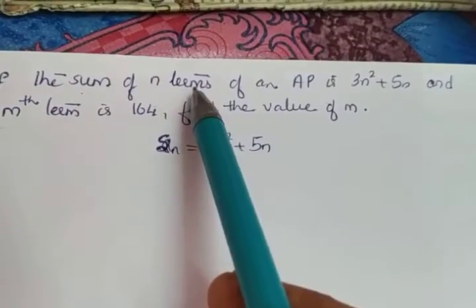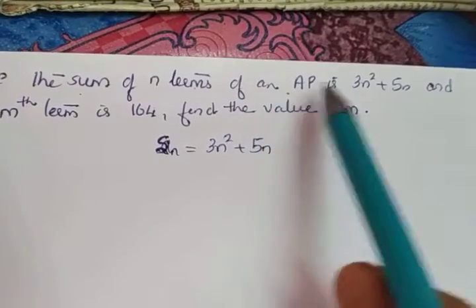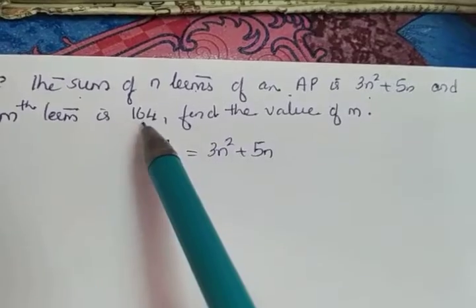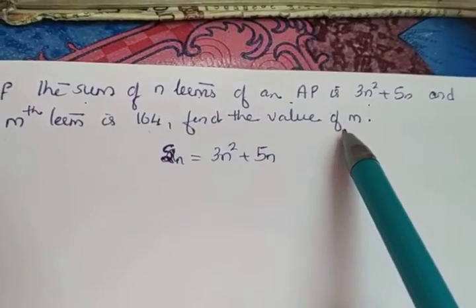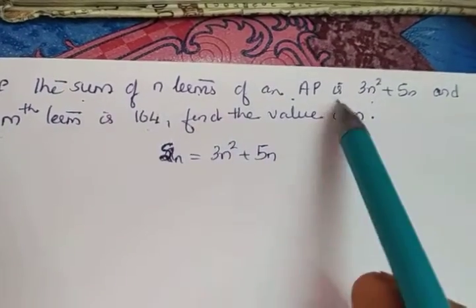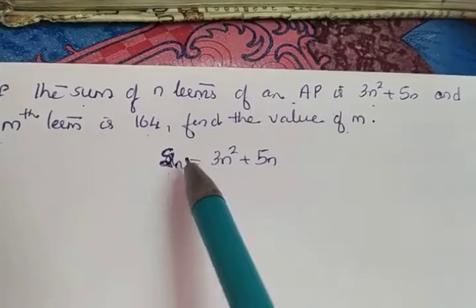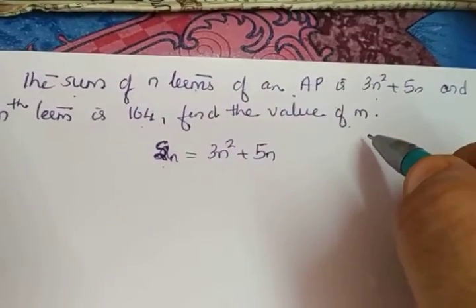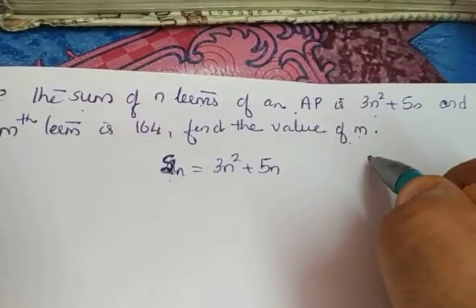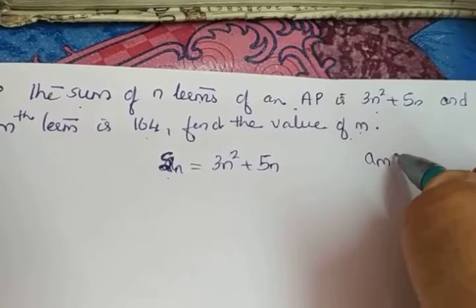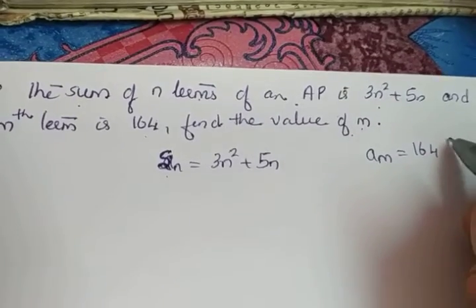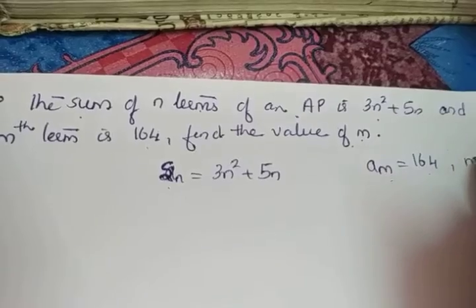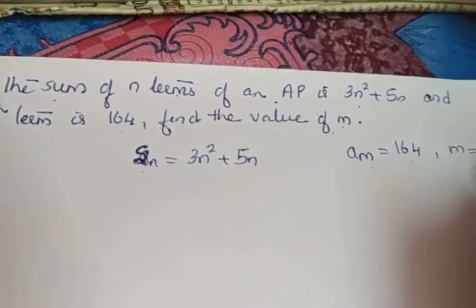Next question: if the sum of n terms of an AP is 3n² + 5n and the mth term is 164, find the value of m. So Sn is given as 3n² + 5n, and we have to find the value of m such that am is equal to 164.